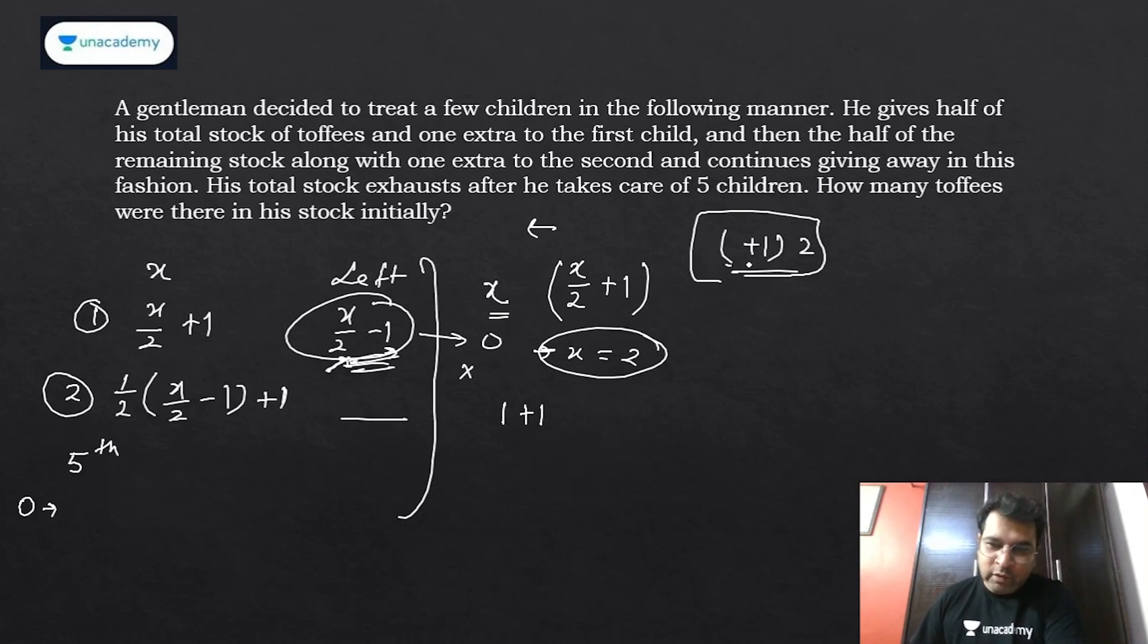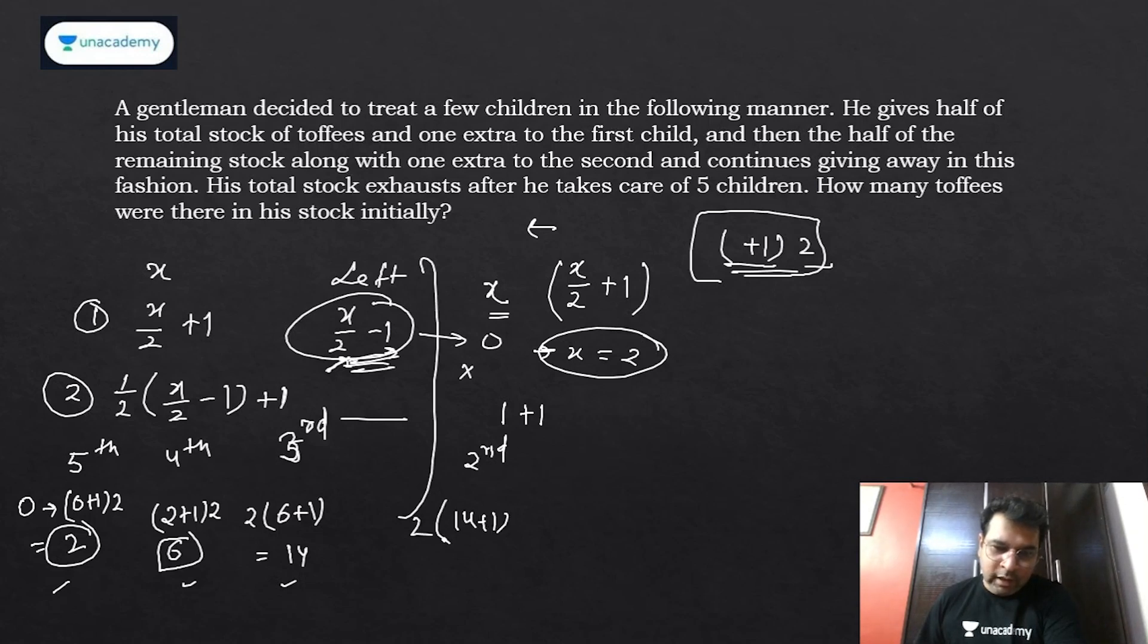To the last child, the fifth child, after giving him toffees we're left with zero. So I'll add one and double that: zero plus one, double is two. To the fourth child: two plus one, double is six. Now see, six - half is three plus one extra, four are gone, remaining is two. Satisfying. Similarly for the third child, six plus one and double is fourteen.